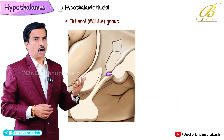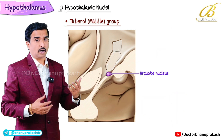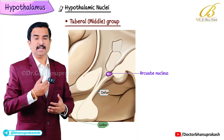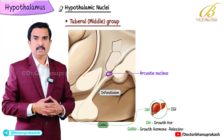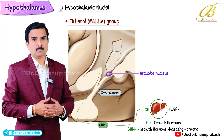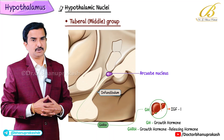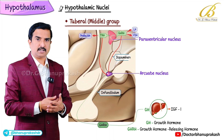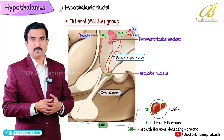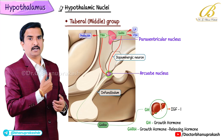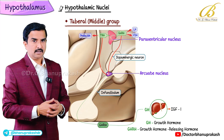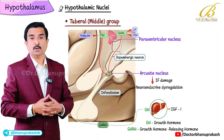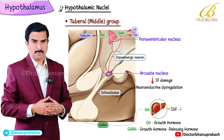The next nucleus is the arcuate nucleus. It sends signals to the infundibulum and regulates the release of hormones from the pituitary. It also inhibits prolactin and gonadotropin releasing hormone via dopaminergic neurons. Damage here results in neuroendocrine dysregulation.